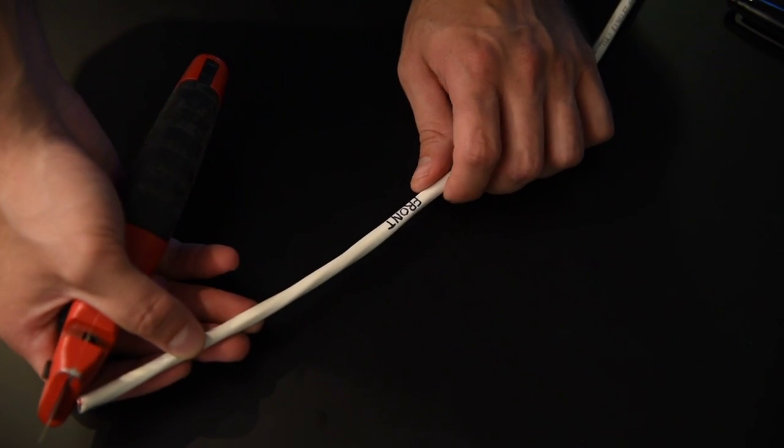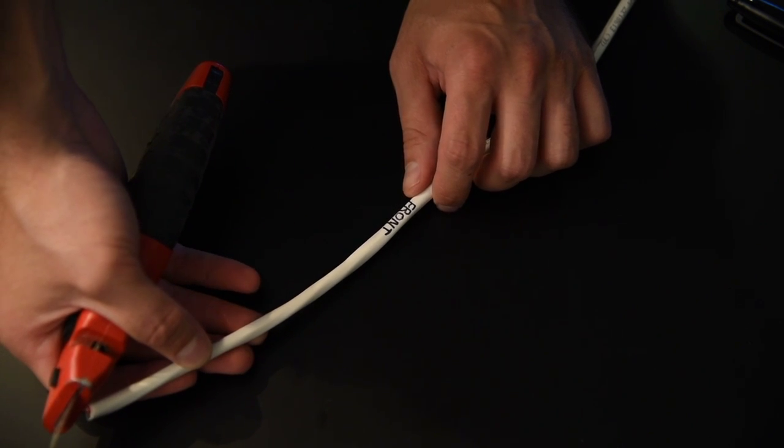Now this side is going to be the side that plugs into the receiver. The other side with the block is what's going to plug into the wall.